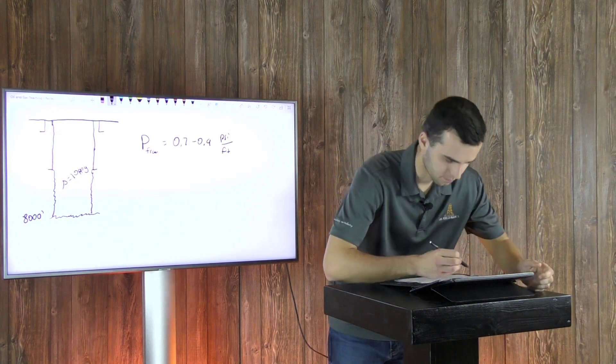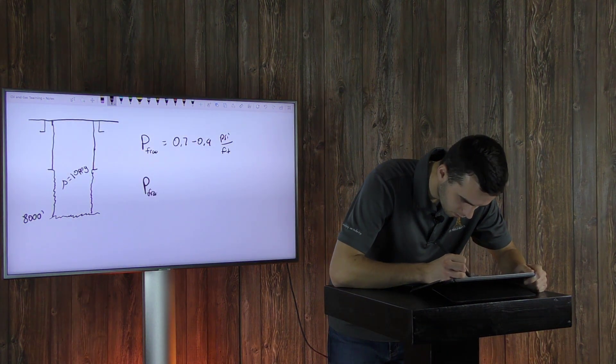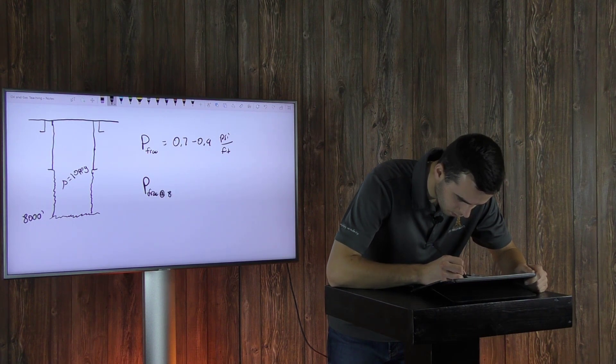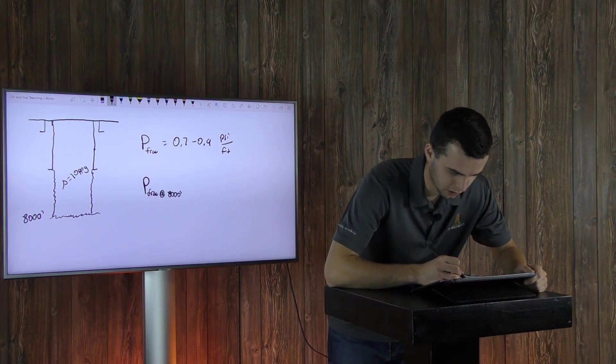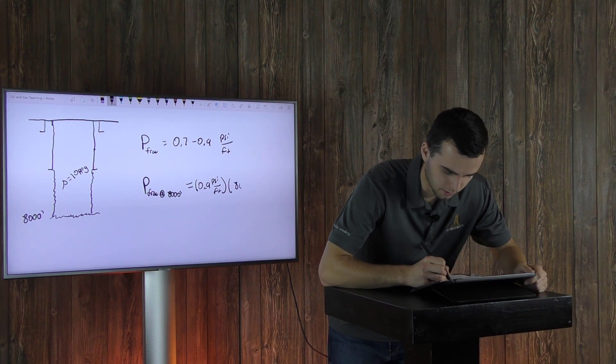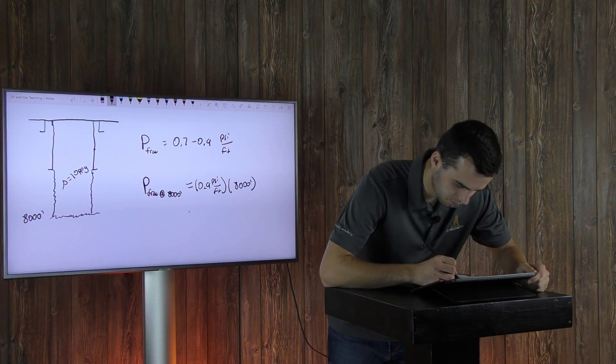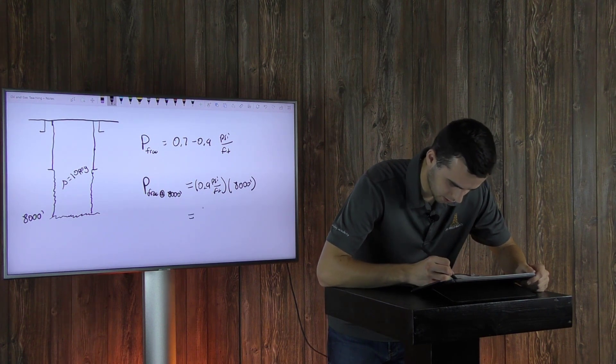Again, it's pretty simple to figure out. So that's your fracture pressure at 8,000 feet. Like I mentioned, we're going to be using 0.9 psi per foot. And you just multiply that by 8,000 feet, which is where you are drilling at currently. And that'll equal 7,200 psi.